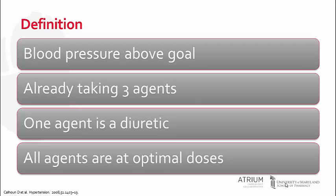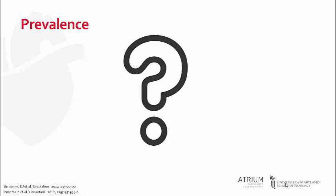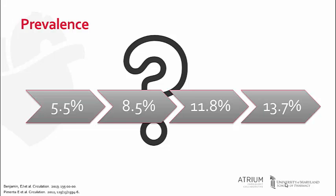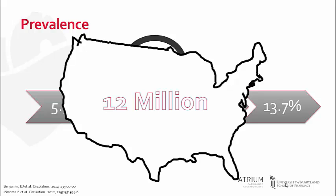So why is it important to be able to define resistant hypertension? It is imperative that we can identify this population because there are differences in diagnostic testing and treatment strategies than in nonresistant patients. The prevalence of resistant hypertension is not well understood. The National Health and Nutrition Examination Survey has been used to estimate the prevalence and has found that the incidence has been increasing over time. Before 1994, only 5.5% of all U.S. adults with hypertension were considered to be resistant. From 1999 to 2004 and 2005 to 2008, the rate increased to 8.5 and 11.8% respectively. In 2017, the AHA estimated 13.7% of hypertensive adults to be treatment resistant, equaling almost 12 million adults in the United States currently affected.